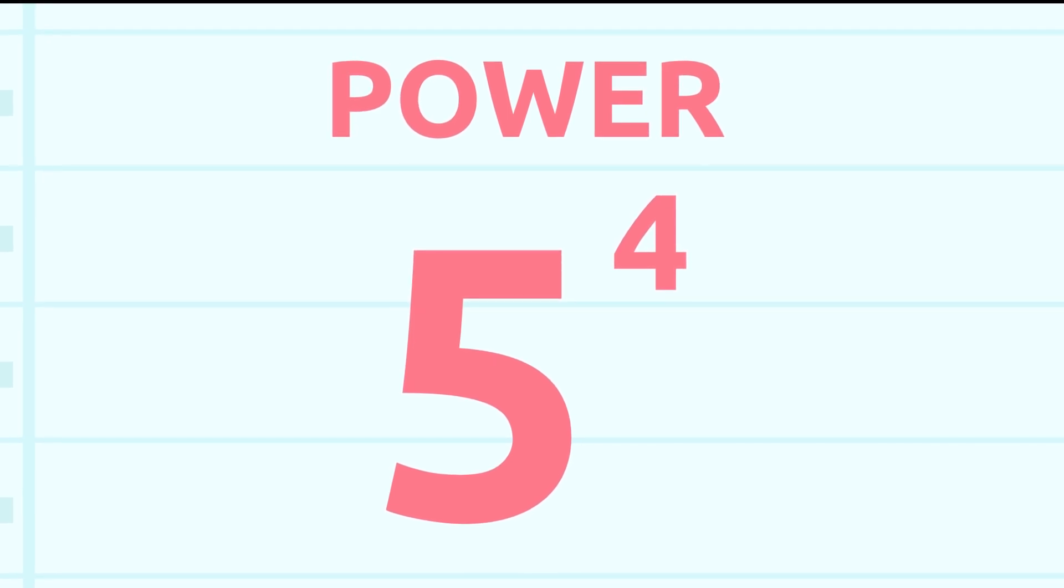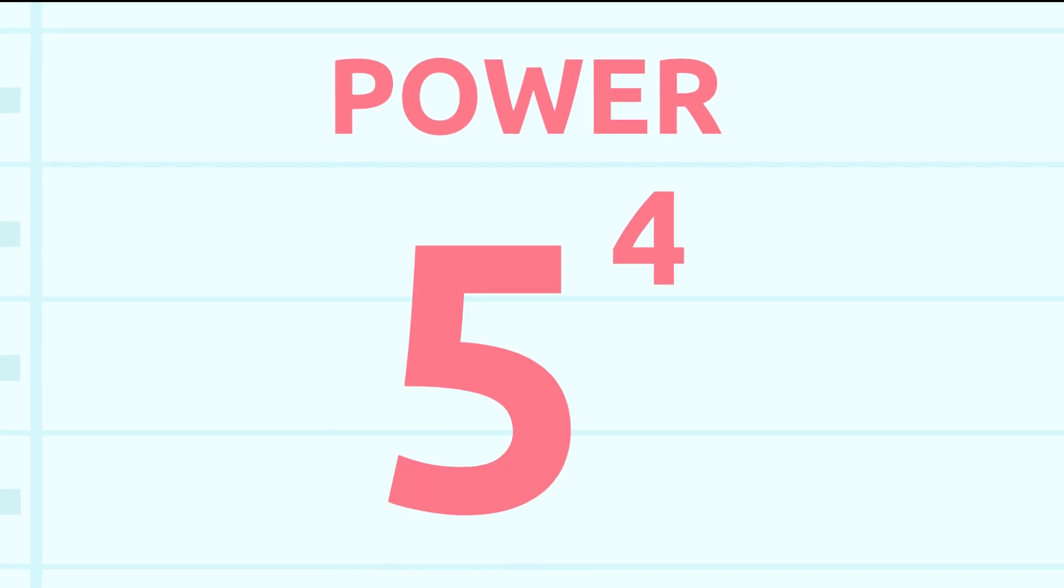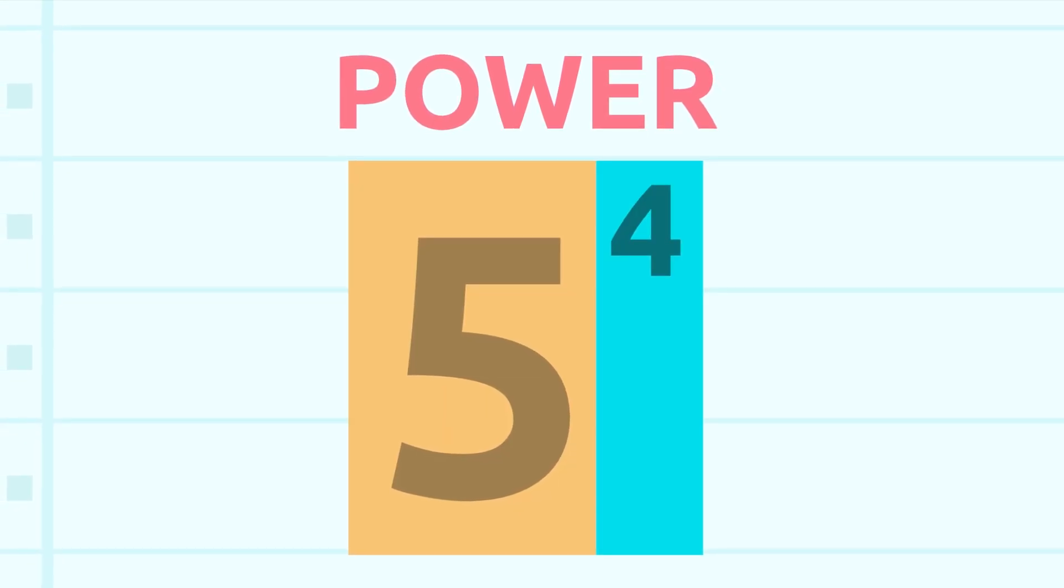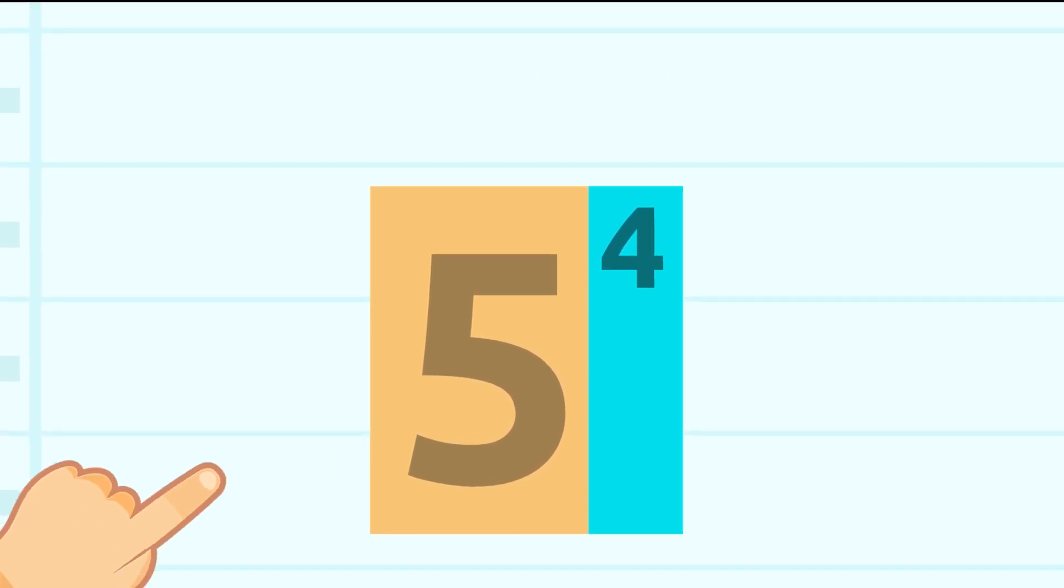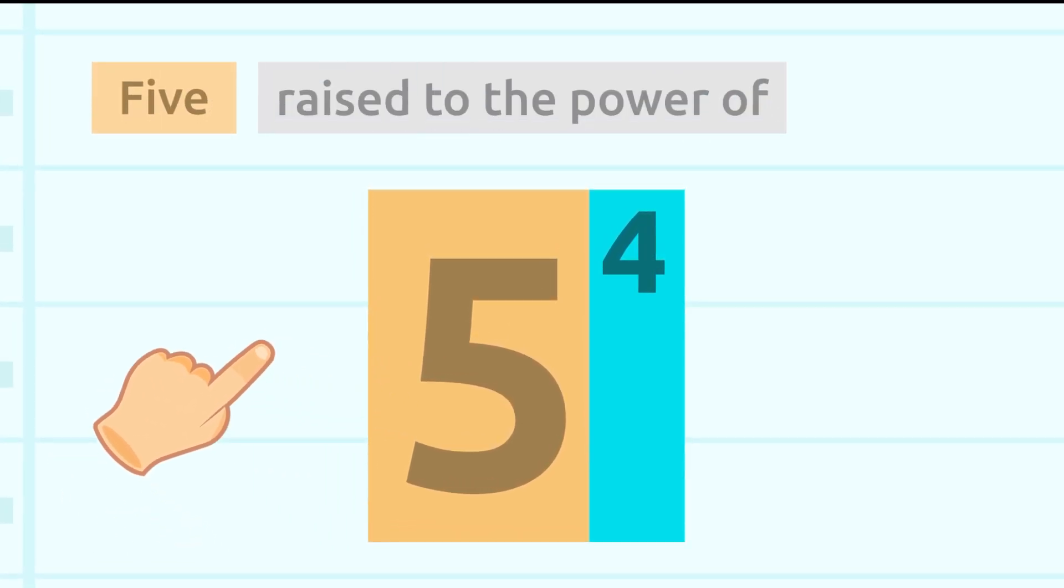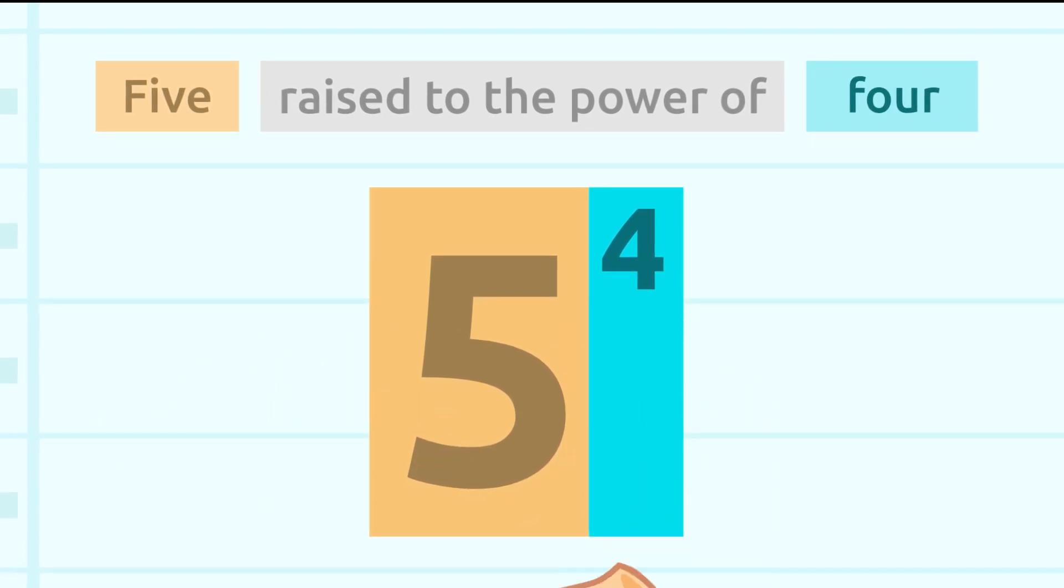A power is made up of two numbers: this big one here and this little one here. So how do we read powers? It's very easy. We read them like this: five raised to the power of four.